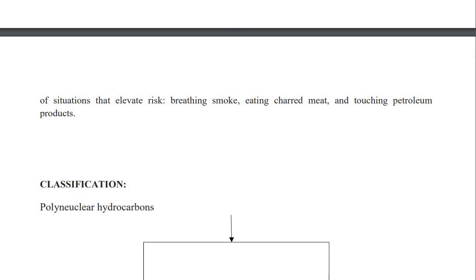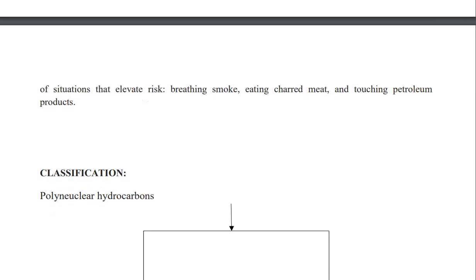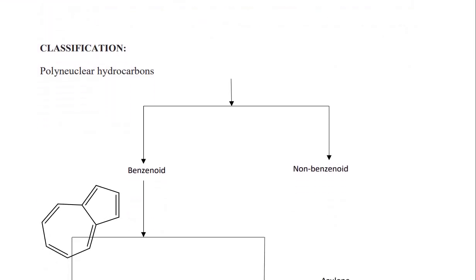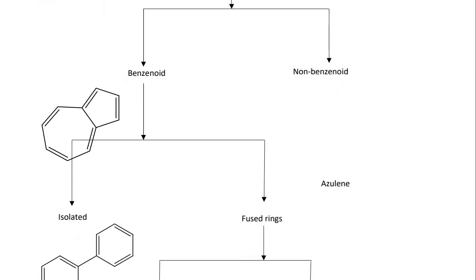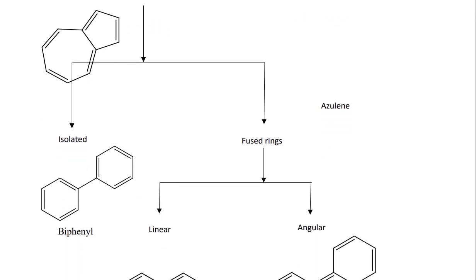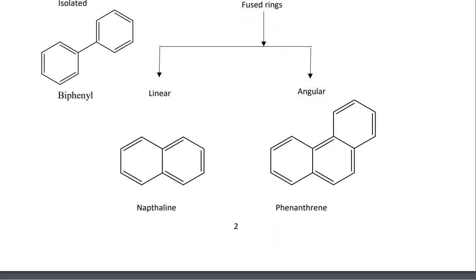Now the chemistry begins. Polynuclear hydrocarbons are classified into non-benzenoid and benzenoid types. The non-benzenoid example is azulene. The benzenoid class is further classified into isolated rings and fused rings, which may be in linear or angular arrangement. For example, naphthalene is the linear arrangement and phenanthrene is the angular arrangement.